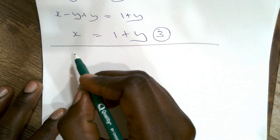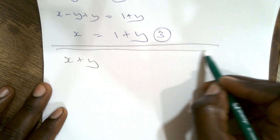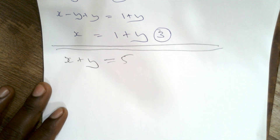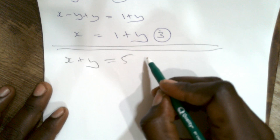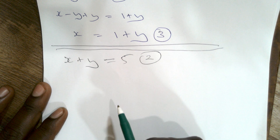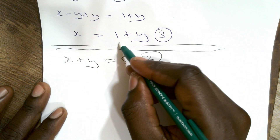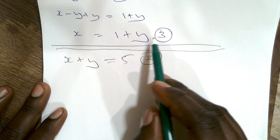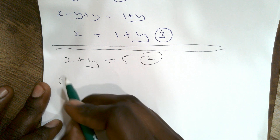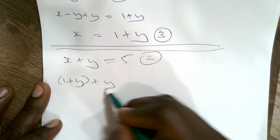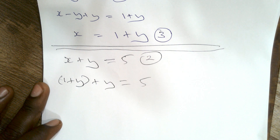Equation 2 is x plus y equals 5. If we substitute equation 3 — which is x equals 1 plus y — wherever we see x we're going to replace it with 1 plus y. So: 1 plus y plus y equals 5.